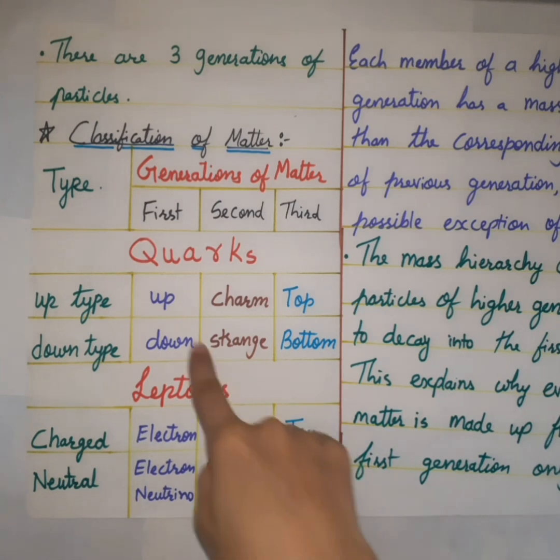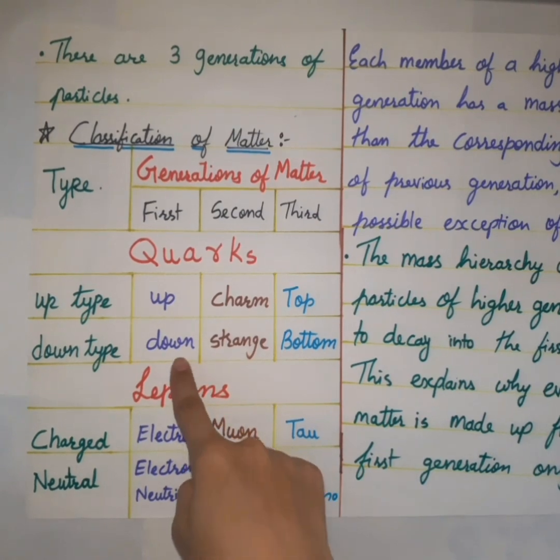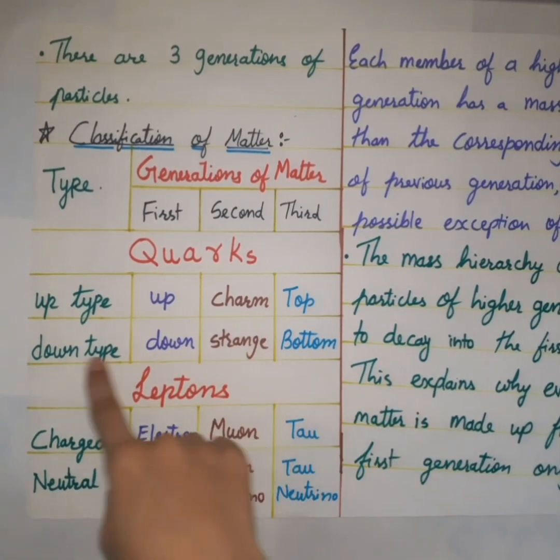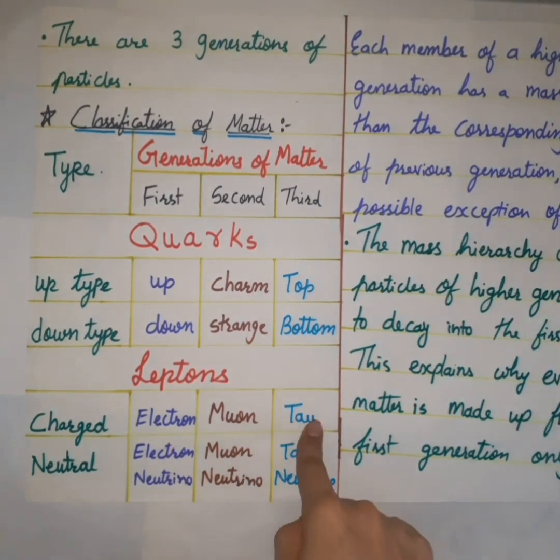Here we can see up, charm, and top quark are the up type quarks, whereas down, strange, and bottom quarks are the down type quarks. Electron, muon, and tau have the charge minus 1, whereas all the three neutrinos are neutral.